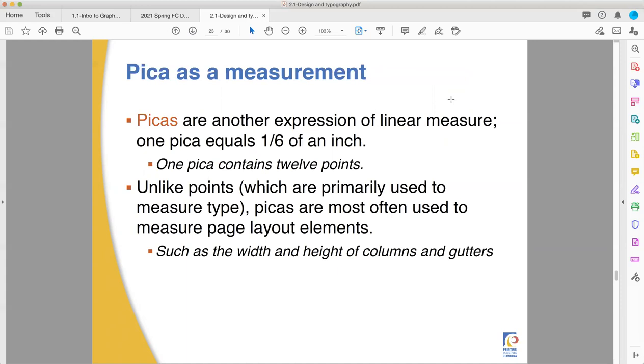Picas are 12 points, or 1/6th of an inch. So 6 picas makes 1 inch, 12 points makes 1 pica. Picas are used for page measurements traditionally. This has to do with some interesting things here. I actually kind of like them.